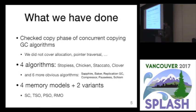We checked four algorithms: Stopless, Chicken, Staccato, and Clover, and six more obvious algorithms. We checked against four memory models and two variants. The memory models we checked are, from stricter to weaker: sequential consistency, total store ordering, partial store ordering, and relaxed memory ordering.